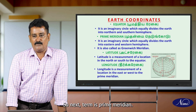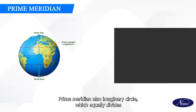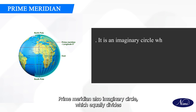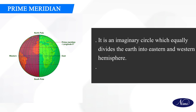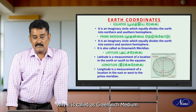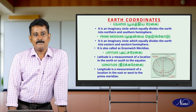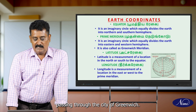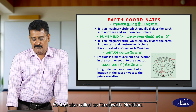The next term is prime meridian. What is prime meridian? Prime meridian is also an imaginary circle which equally divides the earth into eastern hemisphere and western hemisphere. It is also called as Greenwich meridian. Why is it called Greenwich meridian? Because this imaginary circle, that is the prime meridian, passes through the city of Greenwich.